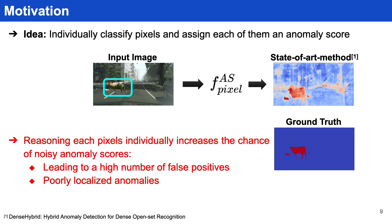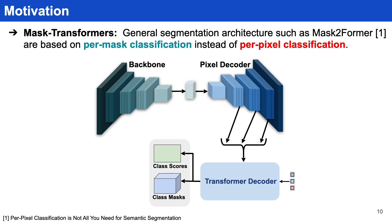However, this leads to a high number of false positives and poorly localized anomalies. So we take a paradigm shift from per-pixel classification architecture to per-mask classification architecture — also called mask transformer — which is a general segmentation architecture.